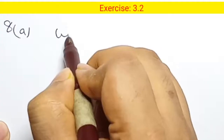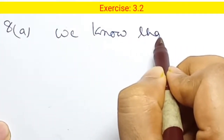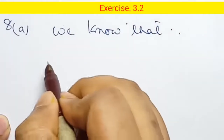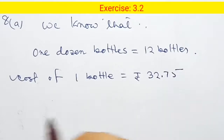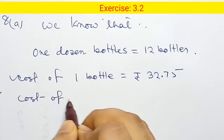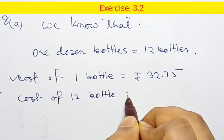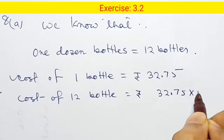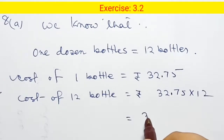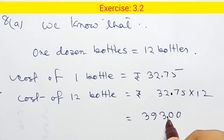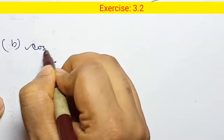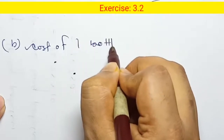The cost of a water bottle is rupees 32.75. Find the cost of one dozen bottles. One dozen equals 12 bottles. Cost of 1 bottle is rupees 32.75. Therefore, cost of 12 bottles equals 32.75 into 12. The product is 39300 — that is, 393.00. The decimal point: 32.75 has 2 decimal digits, so answer is rupees 393.